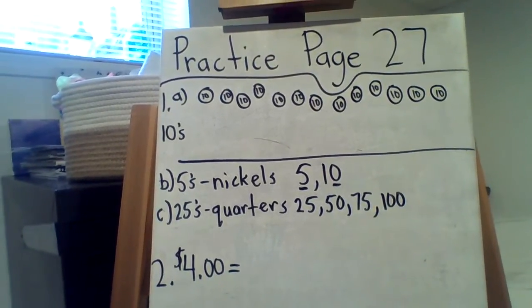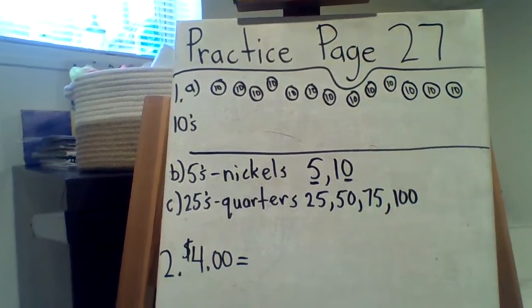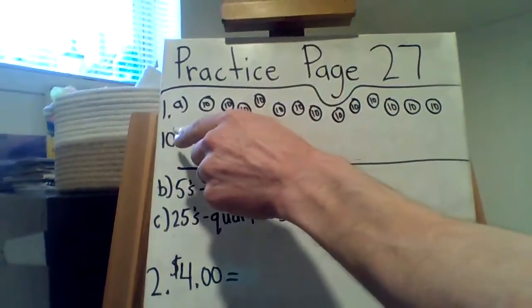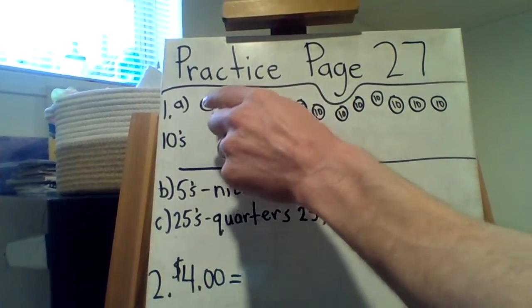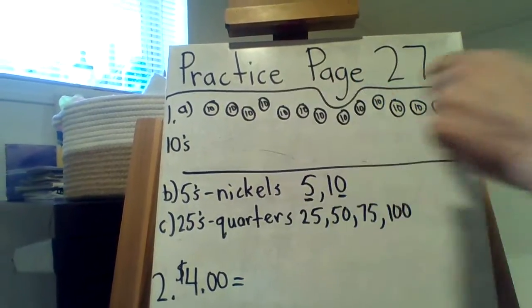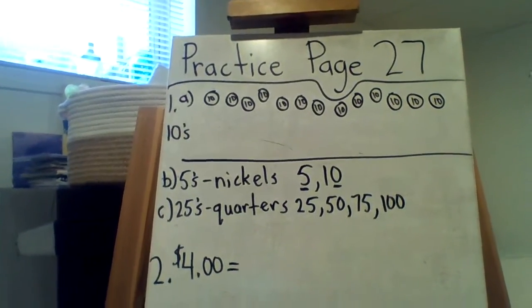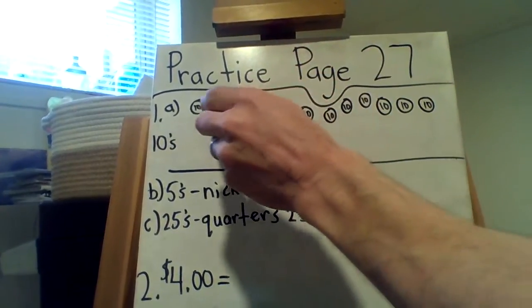1A says, count the money, write each amount in words. Okay, so as you can see, I put tens, now this is just to remind me, dimes are worth 10 cents each. Okay, so we're going to count it up and write it in words. So really counting by tens, you remember?